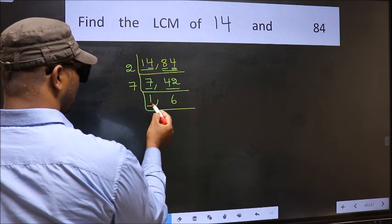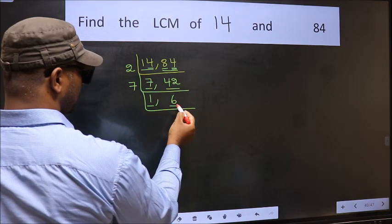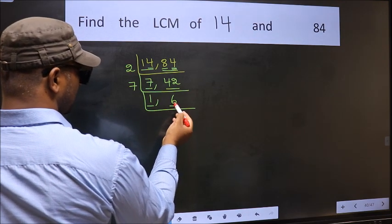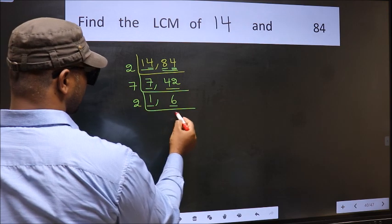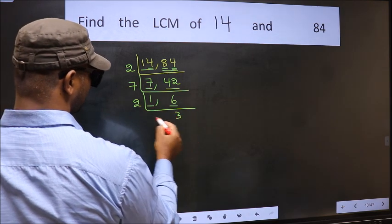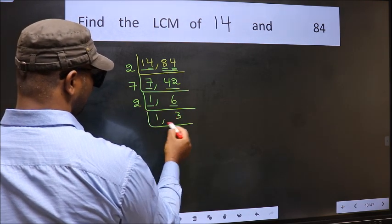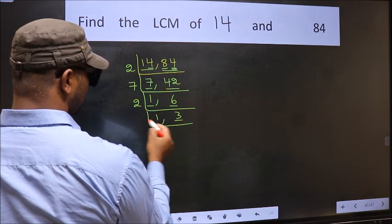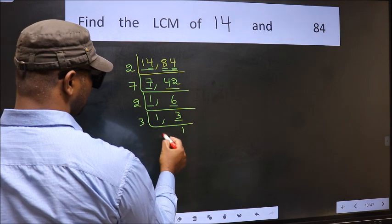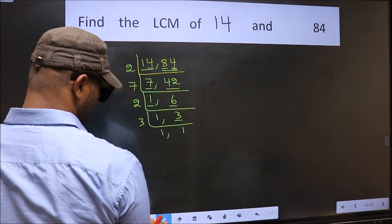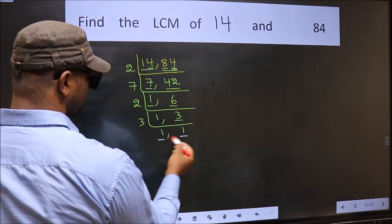Now we got 1 here, so focus on the other number 6. 6 is 2 times 3. Now we have 3. 3 is a prime number, so 3 once is 3. So we got 1 in both places.